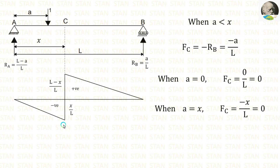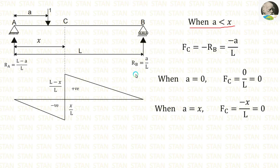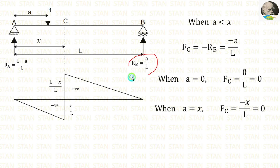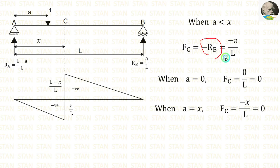Now let us make the influence line diagram for shear force. For that, let us make a section at point C at a distance of X. When A is less than X, we have to calculate the shear force on the right side. On the right side, we are having only one load — that is R_B, which is equal to A by L. This load will be negative because it is moving upwards. When we move on the left-hand side, upward forces will be negative. So, minus R_B equals minus A by L.